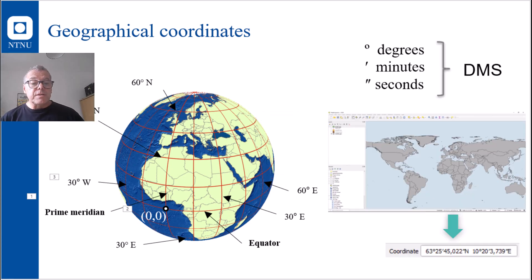The geographical coordinates are given by degrees. That's up to 90 degrees north or 90 degrees south. And it's up to 180 degrees east or 180 degrees west. And in each degree there are 60 minutes, and in each minute there are 60 seconds. And this is called degrees minute second or DMS.